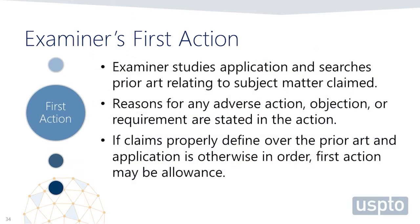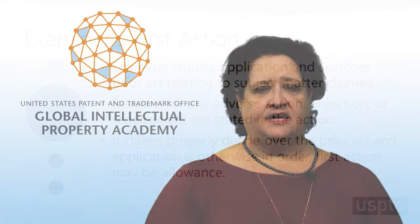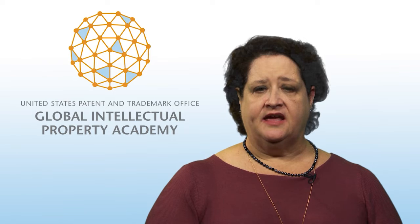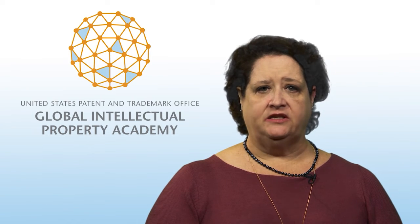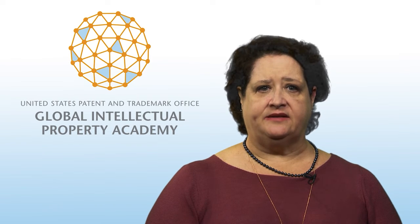Once the search is completed, the examiner will prepare a written communication called an office action indicating the examiner's decisions regarding compliance or non-compliance with the patentability requirements, with supporting reasoning and evidence. If at any point in the process the patent examiner is satisfied that the claimed invention is fully compliant with all legal requirements, the application is allowed to be issued as a patent.